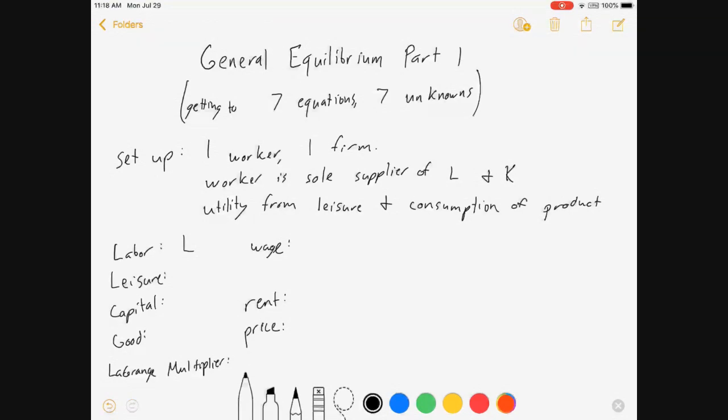So let's define our variables. Labor is L. I'm going to endow my worker with one unit of time and so his leisure is one minus L. Capital, we'll call K. And the good, I'm going to use two notations. I'm going to say X if the consumer eats it. Q is what the firm makes. So both of those are the same thing.